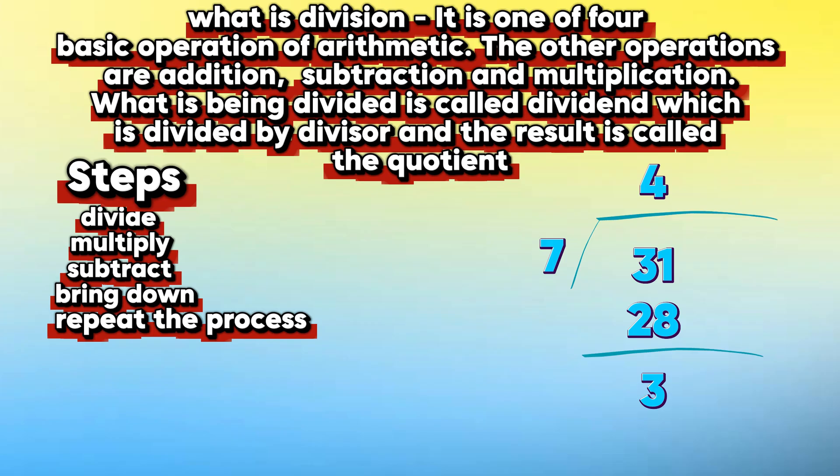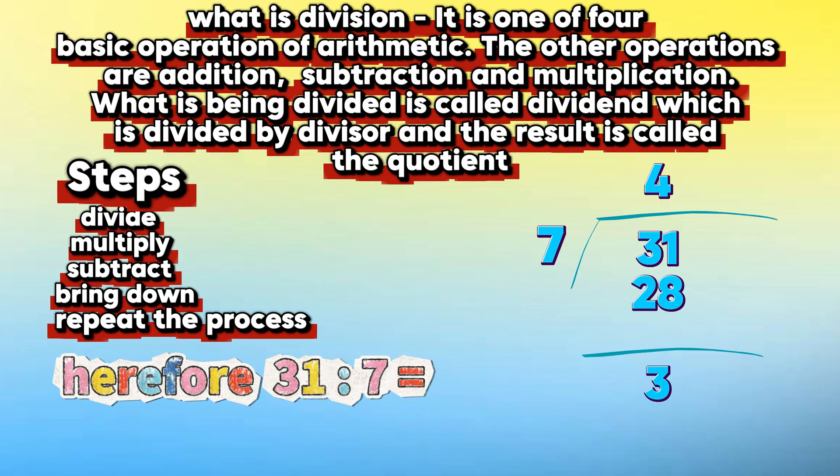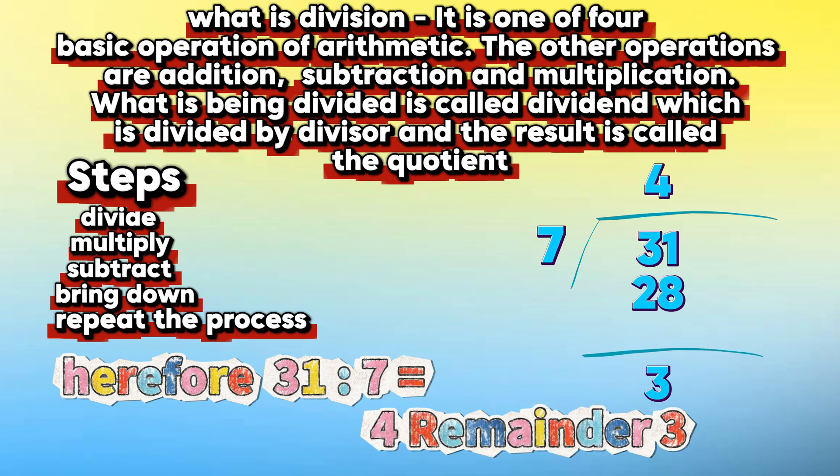Let's check out the example. 31 divided by 7. Let's calculate how many 7s are in 31, so let's try 4. Then let's multiply: 4 times 7 equals 28. Then let's subtract: 31 minus 28 equals 3, and 3 is the remainder. Therefore, 31 divided by 7 equals 4 with a remainder of 3.